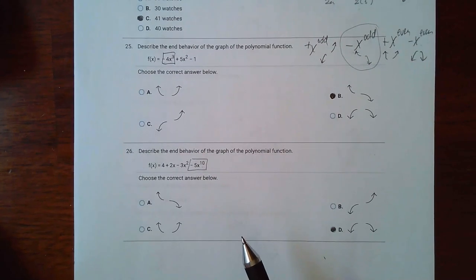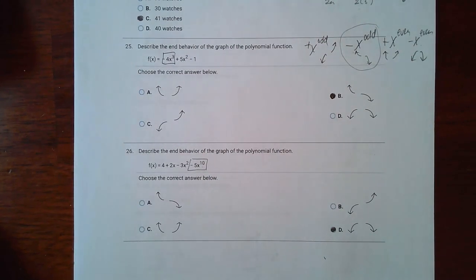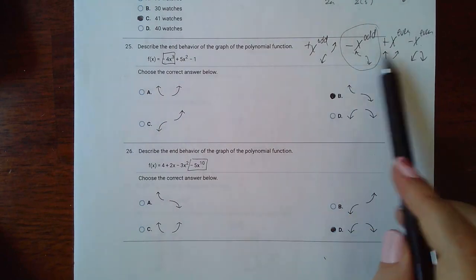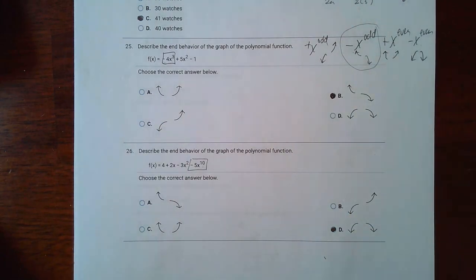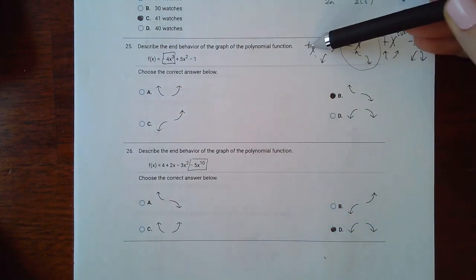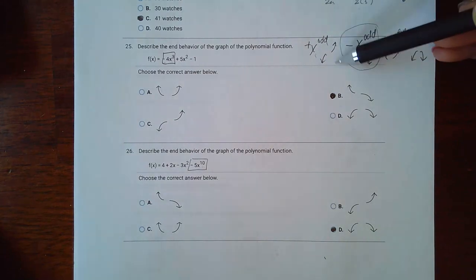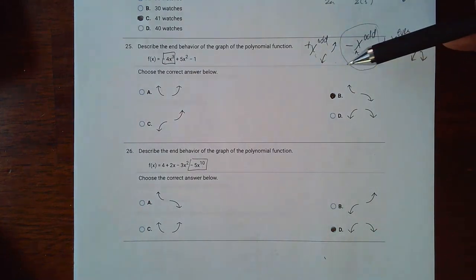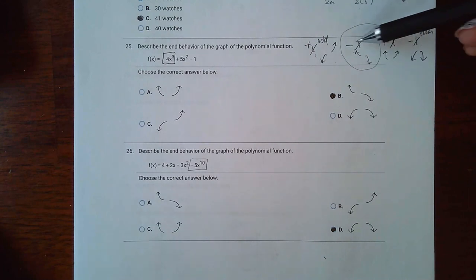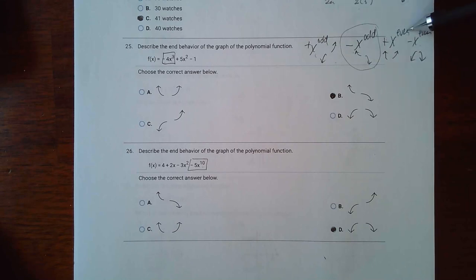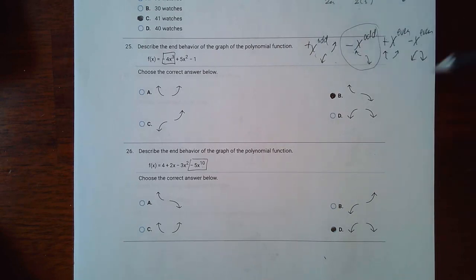Now 25 and 26 have to do with end behavior. So if you make your table this should help in determining the end behavior. So a positive coefficient and x to the odd would have this end behavior. A negative coefficient but an odd exponent would have this end behavior. A positive coefficient and an even exponent would have this end behavior. And a negative coefficient with an even exponent would have this end behavior. Put that information on your note sheet.